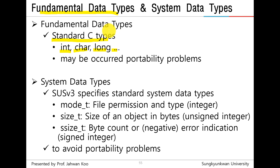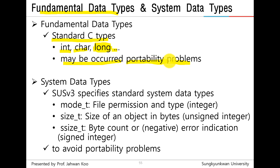However, the fundamental data types have weak points. The size of these fundamental data types varies across Unix implementations. For example, a long data type may be 4 bytes on one system and 8 bytes on another system. So they may cause portability problems. To avoid portability problems, SUS version 3 specifies standard system data types.